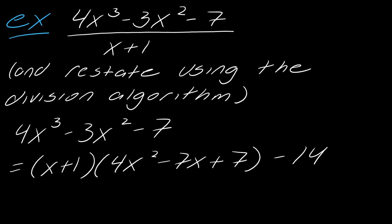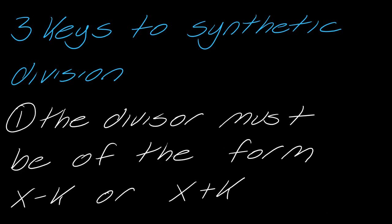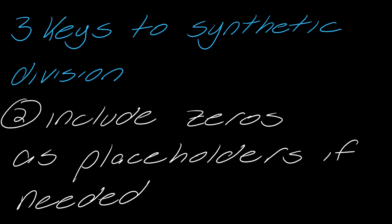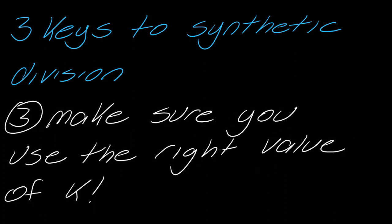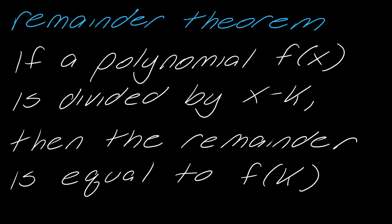There are really three keys to synthetic division. One: the divisor needs to be of the form x minus k or x plus k, and you take whatever the opposite sign is — the additive inverse. Two: include zeros as placeholders if needed. Three: make sure you're using the right value of k — always take the additive inverse of your divisor.